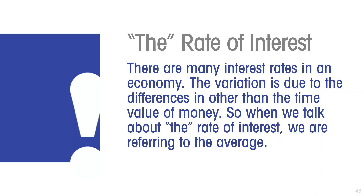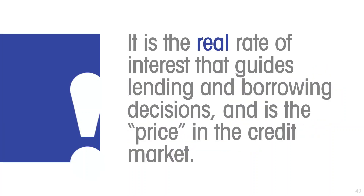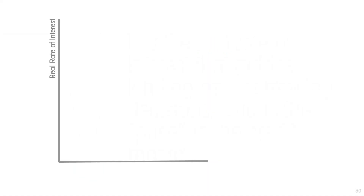We want to understand what determines the average rate of interest across the economy. The factors that affect the average rate will affect all rates of interest more or less equally, so we get away with speaking of the rate of interest. It is the real rate of interest that guides lending and borrowing decisions — that is the price in the market for investable funds. On the vertical axis we have the real rate of interest; on the horizontal axis we have the quantity of funds being loaned to or borrowed from the financial sector.